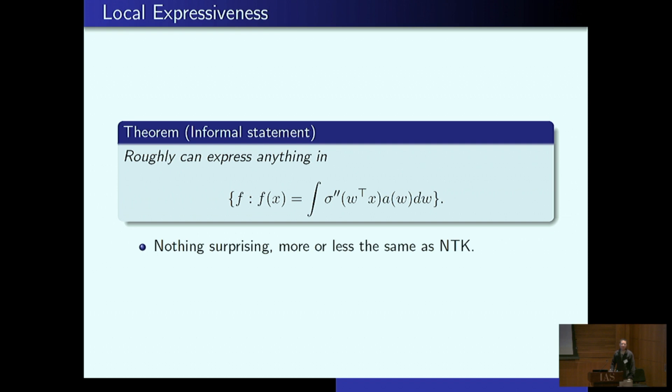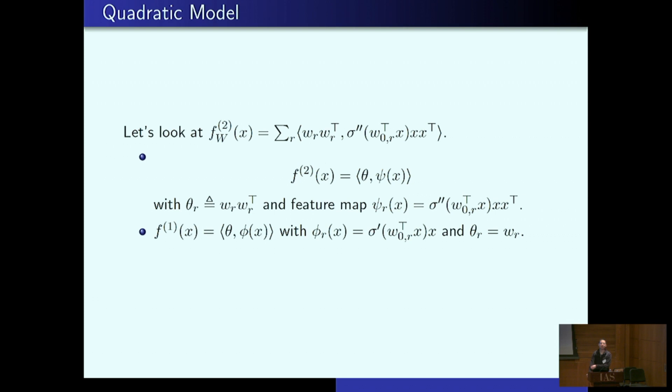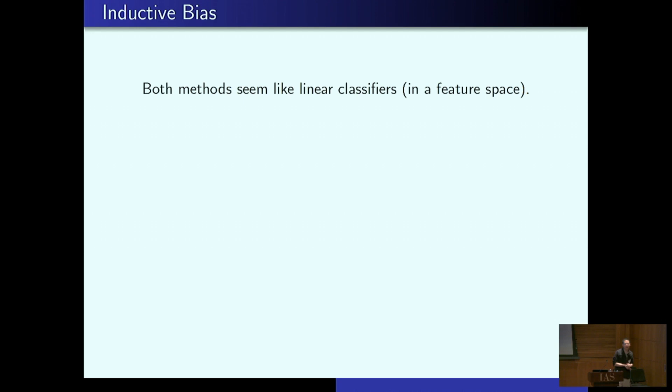Okay, so let's look at what f2 looks like. So f2, I've written it more suggestively as the inner product of theta, where theta, the rth coordinate of theta, is a rank one matrix wr wr transpose. And I have a certain feature map psi of r of x. Essentially think of this like as the random feature embedding induced by the neural network. And you have something linear in this feature map. And I've tried to write it in a way to parallel the usual NTK developments. Again, phi here is a feature and you have an inner product. Okay, so this seems kind of weird. Both methods seem like a linear classifier in a certain feature space induced by the neural network. So what the heck, why am I doing this? Seems I've gained nothing, right? So is it actually different from a kernel method?